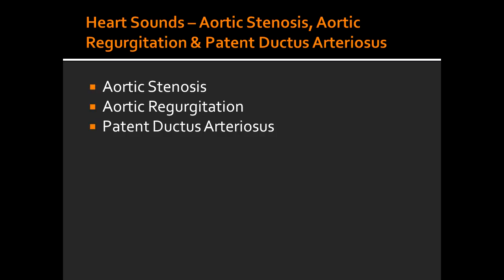What are the characteristic sounds that can be heard in aortic stenosis? The sounds include a systolic murmur transmitted to the carotid artery. There is a crescendo-decrescendo murmur, meaning it goes from loud to soft.